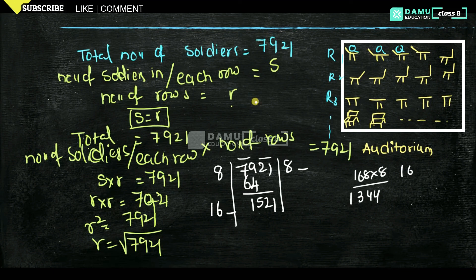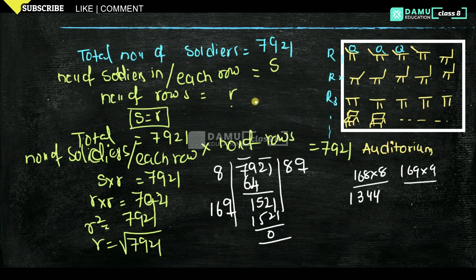Then try 169 into 9. Why? Because the unit digit is 1. So 169 into 9 gives 1521. The remainder we get is 0. So the quotient is 89. That means the square root of 7921 is equal to 89.